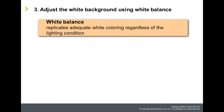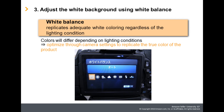Tip 3: Adjust the white background using the white balance function on your camera. White balance is a camera function that adjusts the white in your photo regardless of the lighting condition. Colors will differ depending on lighting conditions and environment. Therefore, optimize through camera settings to replicate the true color of the product.